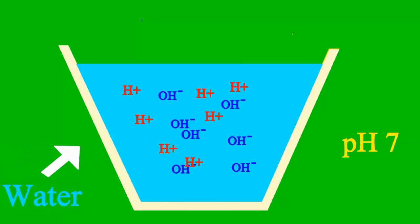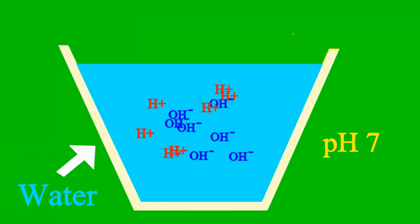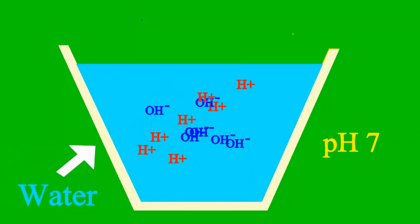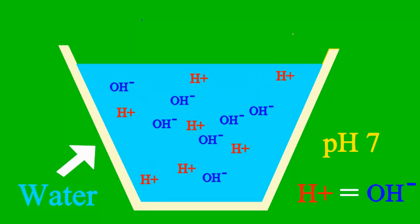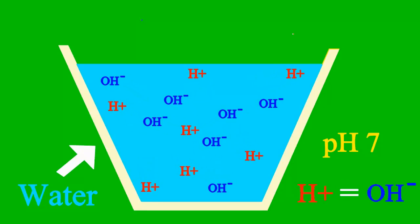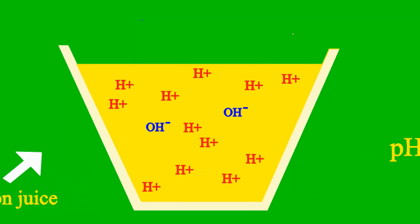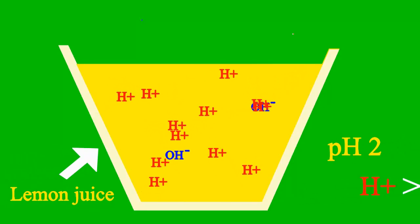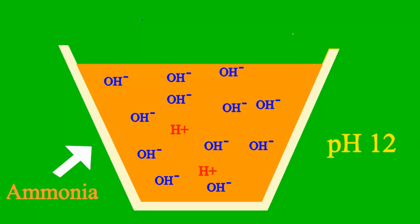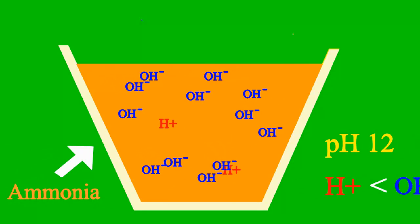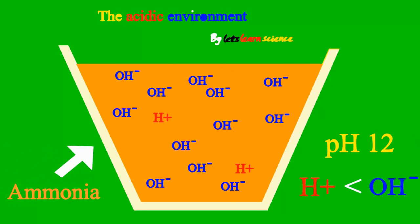When the pH is 7, it's a case where the sample is neither an acid nor a base. But less than 7, it's an acid. More than 7, it's a base all the way.